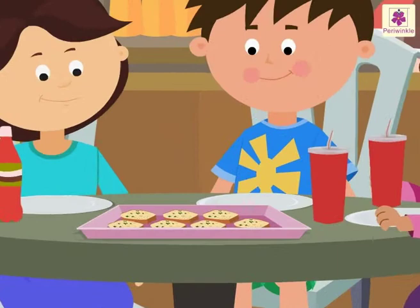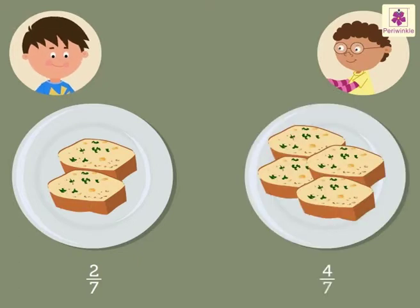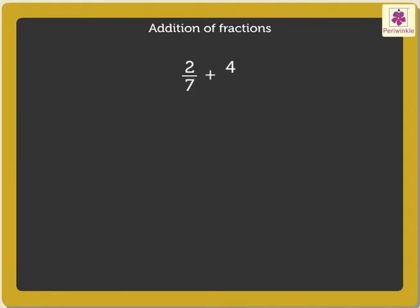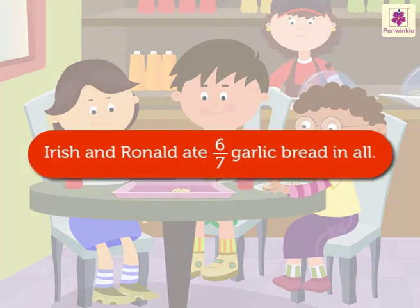It's garlic bread time now. Irish ate two-seventh of the garlic bread. Ronald ate four-seventh of the garlic bread. How much garlic bread did they eat in all? Add 2 upon 7 and 4 upon 7. Adding the numerators directly, we get 2 plus 4 upon 7, which is equal to 6 upon 7. Thus, Irish and Ronald ate six-seventh garlic bread in all.